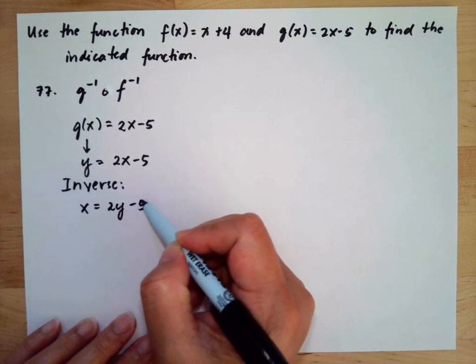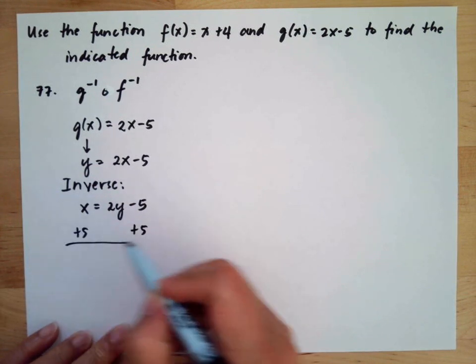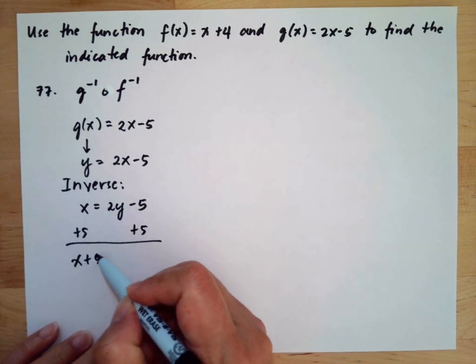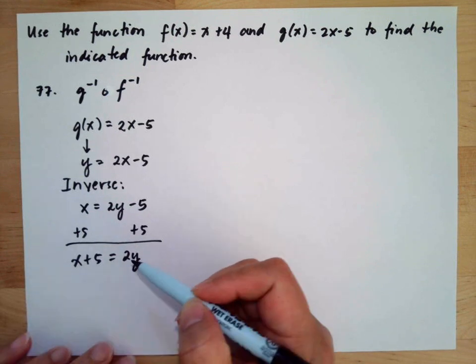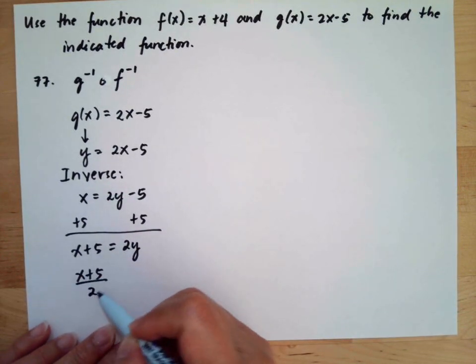We add 5 to both sides. So x + 5 = 2y, and divide both sides by 2. So (x + 5)/2 = y.